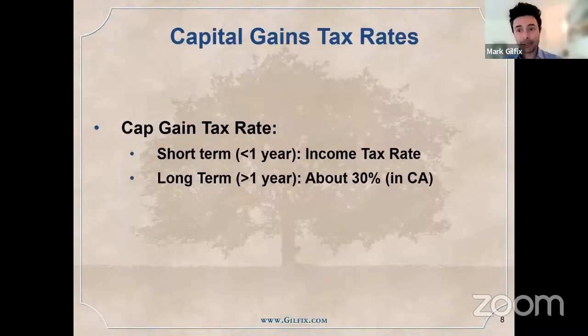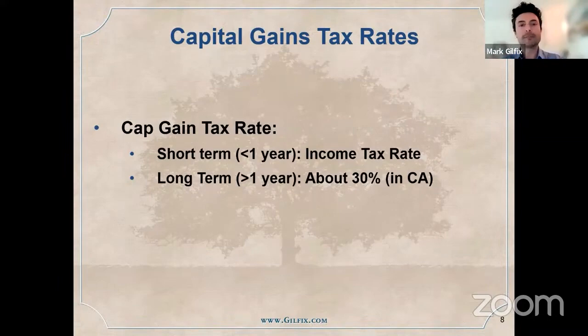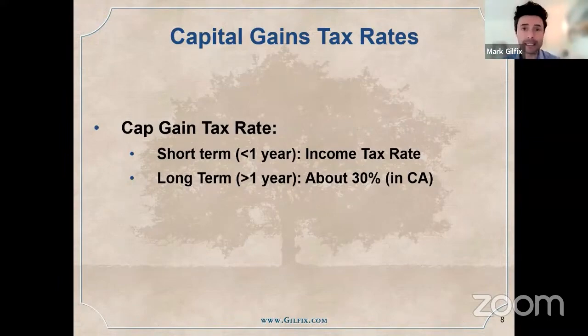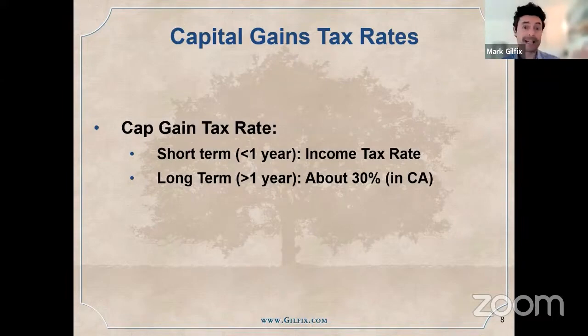Capital gains tax only applies if you sell the asset. If you own something and you sell it in under a year, that's a short-term capital gain, which is typically taxed as ordinary income. If you bought a stock and sell it in under a year, any profit is just added to your taxable income, and that's usually a punishing tax rate.